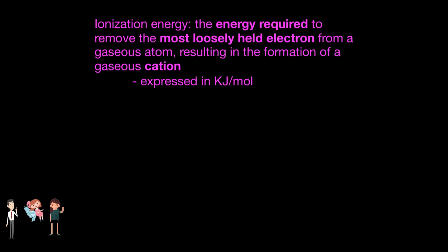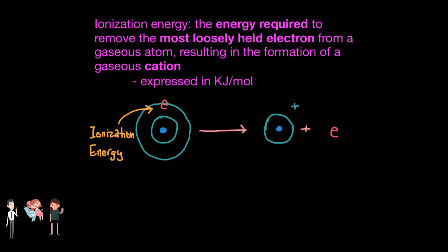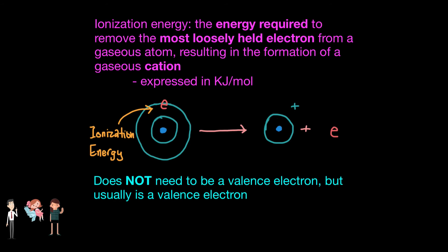I didn't realize these periodic trends could be so interesting. Chemistry is interesting. And now that we have properly laid out the foundations, we can get into even more exciting trends, like ionization energy. Ionization energy is the energy required to remove an electron from a gaseous atom in its ground state to form a gaseous cation. The electron removed does not have to be a valence electron, but generally the valence electrons are the electrons being removed because they are most loosely held by electrostatic forces of attraction between the nucleus and that electron.